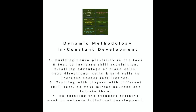Third, training with players with different skill sets so your mirror neurons can imitate them. For example, if you take a high-level Brazilian kid at 15 years old and put him in the Sunderland Academy in England, he's going to have a different technical and tactical skill set than the players at Sunderland — it's a different culture. The Sunderland players would be able to learn by playing with that player, and some of that learning is due to mirror neurons. Fourth, rethinking the way that we actually train — why can't we pull two or three players out of training who need a specific skill set and do that in a game-based training on a weekly basis?